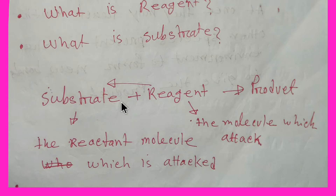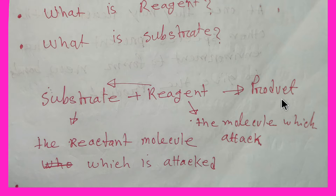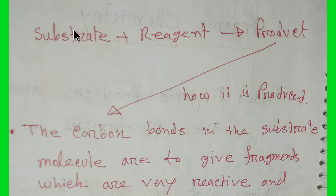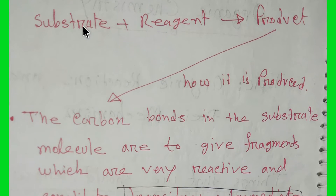When reagent attacks substrate, one carbon bond will break and produce an ion — positive or negative — and this positive or negative ion will attach to another ion and form a product. The carbon bonds present in the substrate molecule break when reagent attacks, causing the substrate molecule to give fragments.